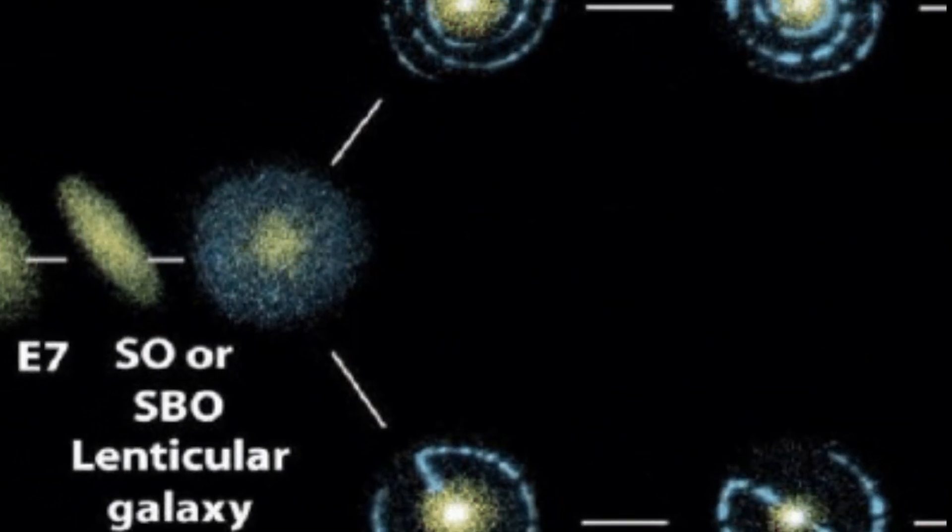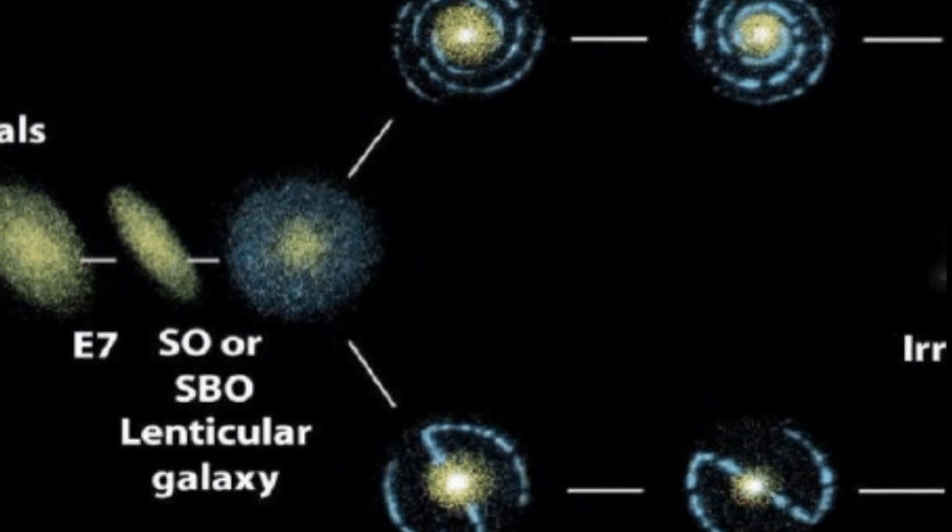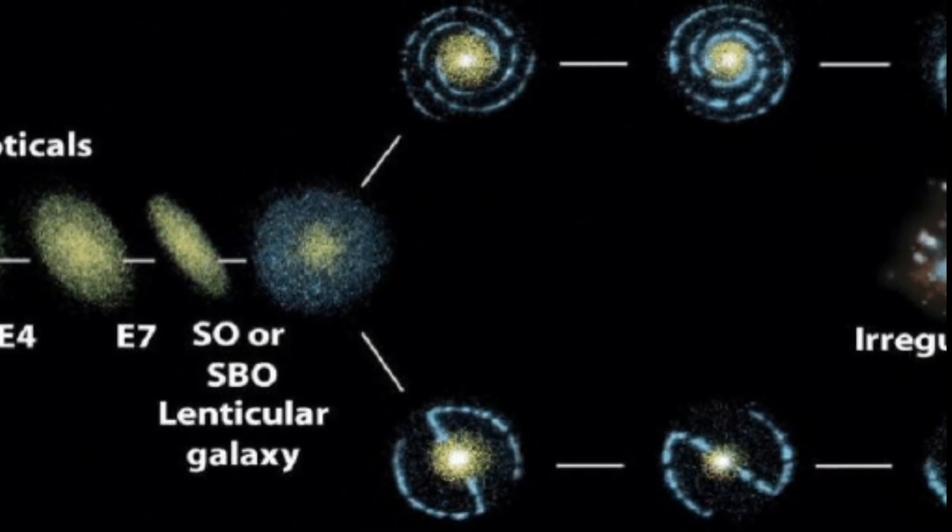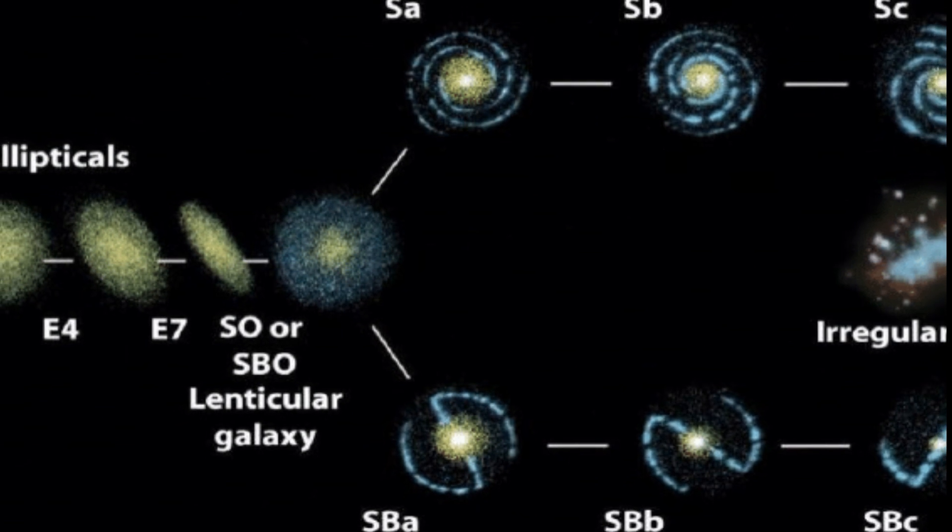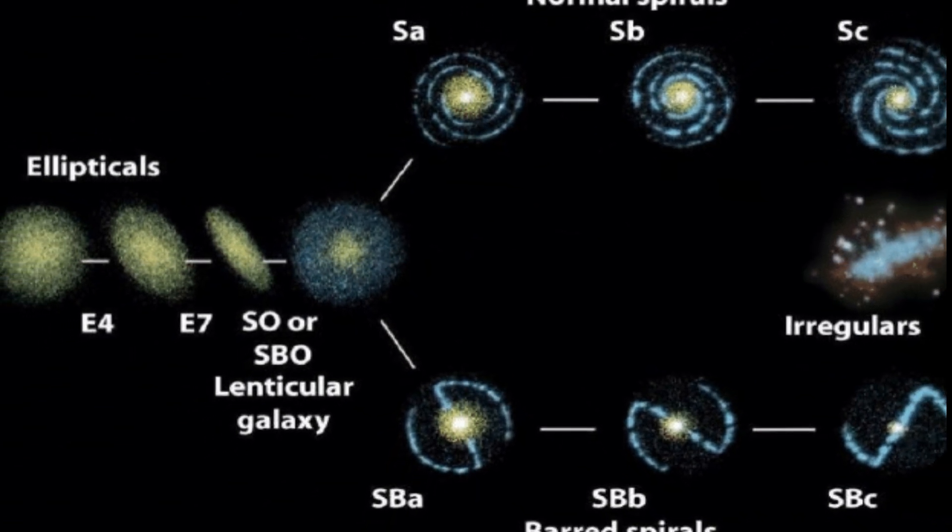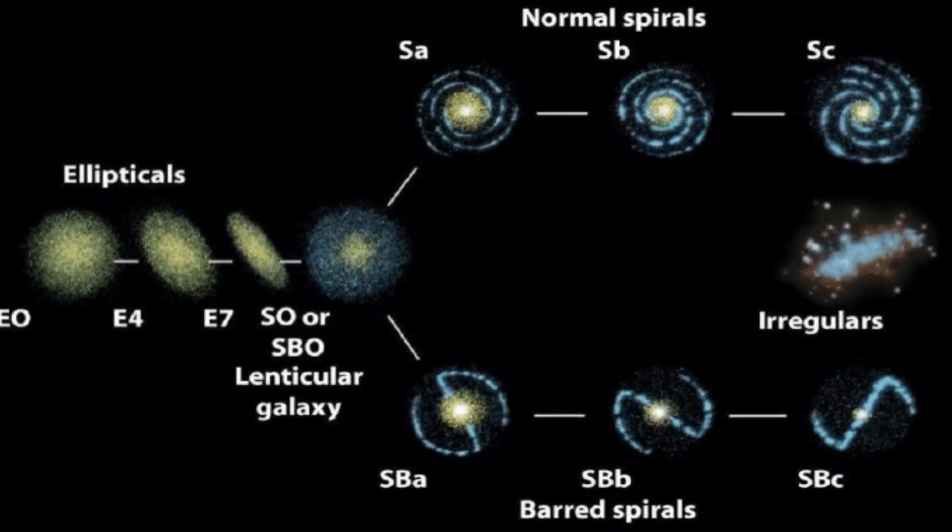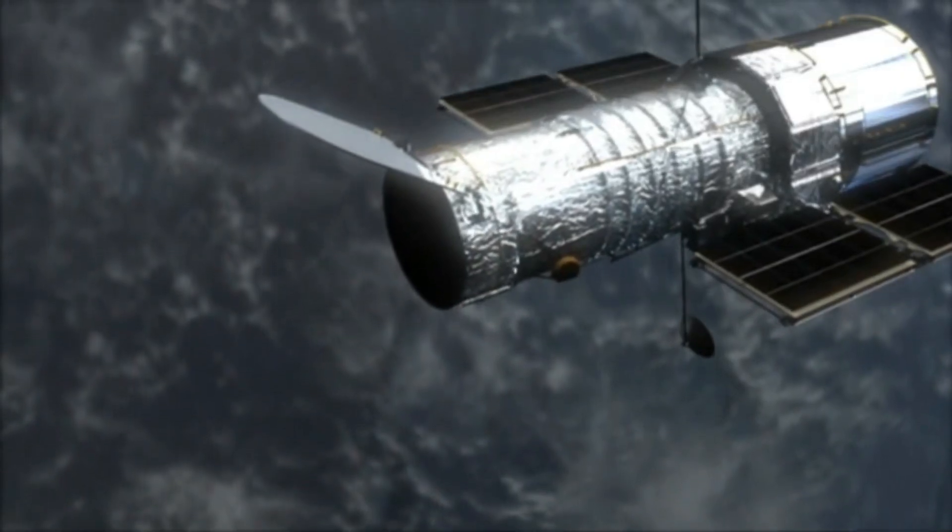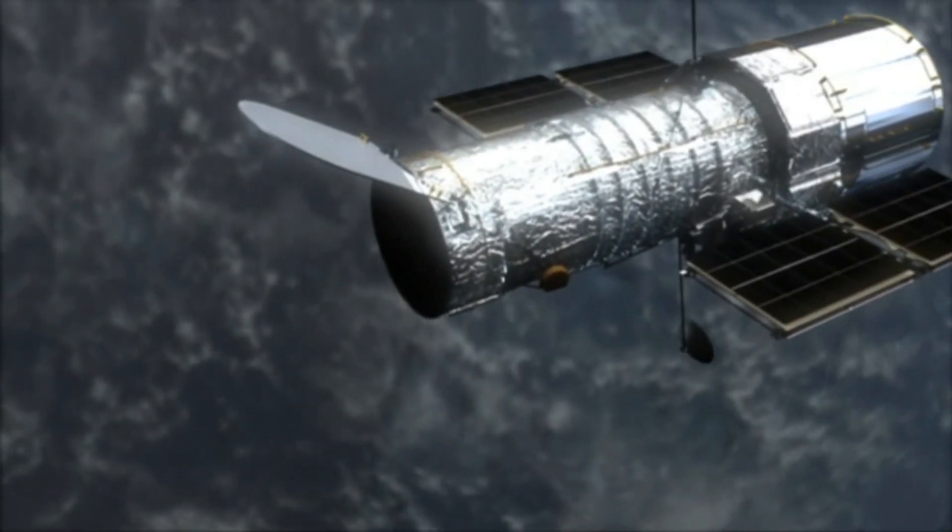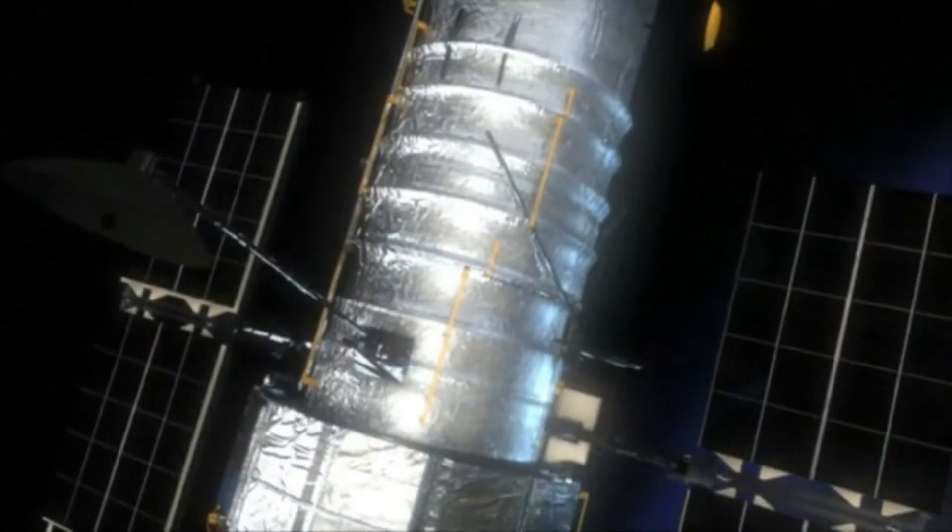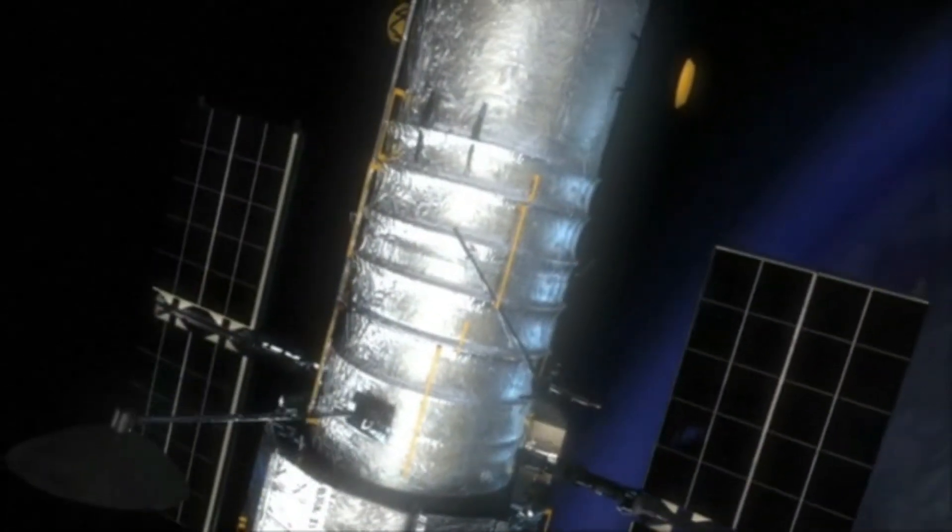Edwin Hubble's 1926 Hubble sequence classified galaxies into ellipticals, lenticulars, and spirals, setting the stage for the categorization of galactic structures. The Hubble Space Telescope, launched decades later, offered glimpses of distant galaxies, challenging preconceived notions with peculiar and irregular shapes.